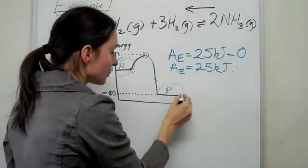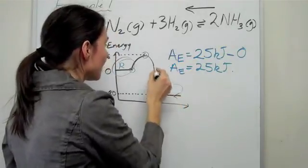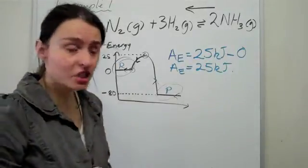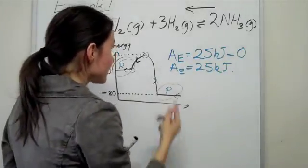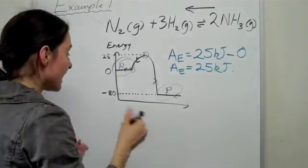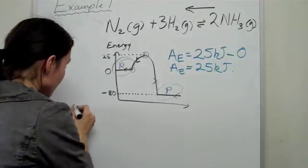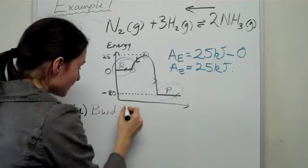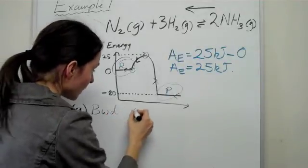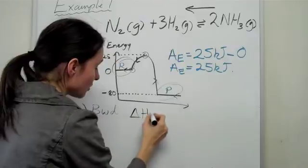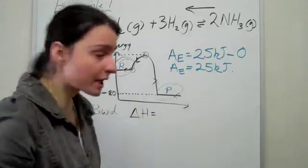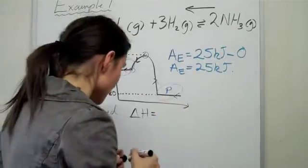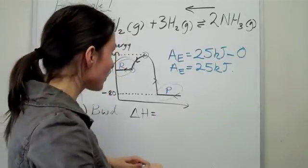You're making this a reactant now and you're making this a product. So you're going backwards, you're going from here, you're going up there, you're going down here and you're going there. So that's your reaction now, and so that's going to actually change your delta H. Let's have a look at how backward reaction is going to change delta H.